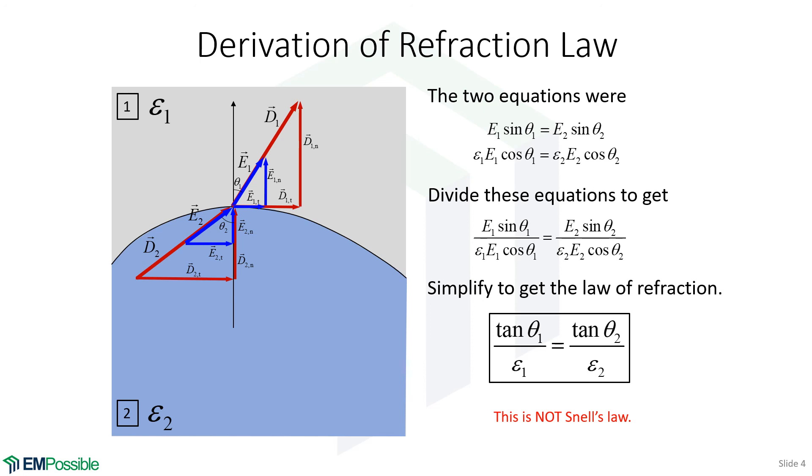Please do not confuse this with what is called Snell's Law for refraction. Snell's Law for refraction is describing the bending of a wave on either side of the interface, and that has to do with the speed of the wave varying. Here, there's no waves. Everything is static. It's still a bending concept, so we still call it refraction, but it's for electrostatic fields.